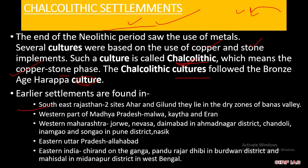South-east Rajasthan में दो sites मिले — आहार और गिलुंद। यह आपकी Banas Valley है, उसके dry zones में, सूखे इलाके में मिलती हैं। उसके अलावा western part, जो कि Madhya Pradesh का है — उसमें जैसे Malwa, Kayatha, Eran — यहाँ पे ये सब sites देखने को मिलीं।